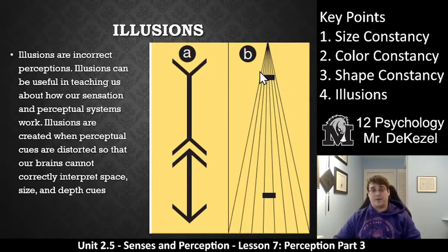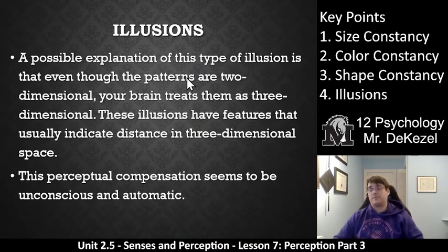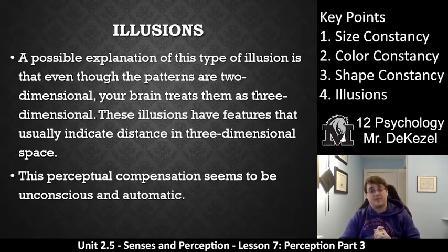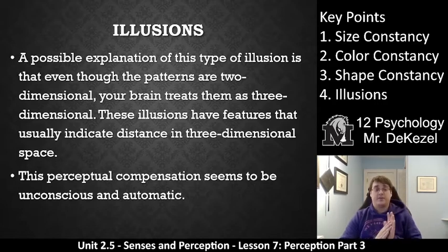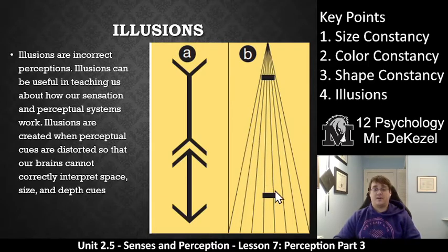To me, this looks way bigger in B than the one down here, even though they take up the exact same amount of space — it's very confusing. If you isolate each one, they are the same size, even though they do not look it. A possible explanation for these types of illusions is that even though the patterns are two-dimensional, our brain tries to treat them as three-dimensional, and these illusions have features that usually indicate distance in three-dimensional space, such as linear perspective.